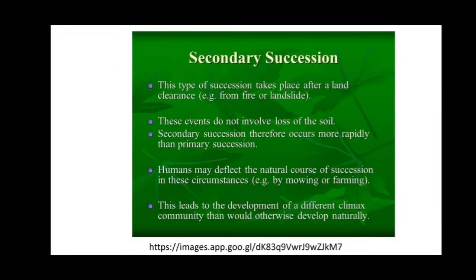Secondary succession takes place after land clearance — for example, from a fire or a landslide. Taking the Australian jungle fire as an example: the ecosystem already existed, but after the fire the ecosystem was destroyed along with plants and animals. New plants then grow on that area, and this type of succession is known as secondary succession.